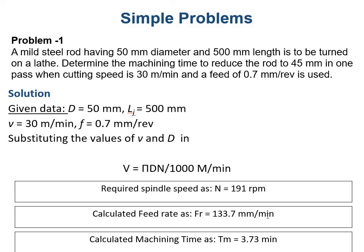If we divide total cutting length 500 millimeter with feed rate 133.7 millimeter per minute, millimeters cancel out and we get the calculated machining time required to convert 50 millimeter diameter rod to 45 millimeter diameter in one single pass is Tm = 3.73 minutes.